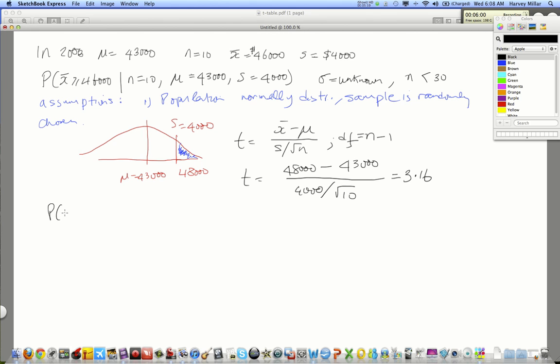So, the probability of x bar being greater than or equal to 48,000 is the same, or is equivalent to the probability that t is greater than 3.16. All right?